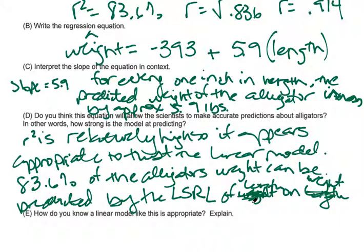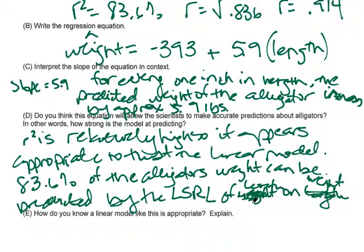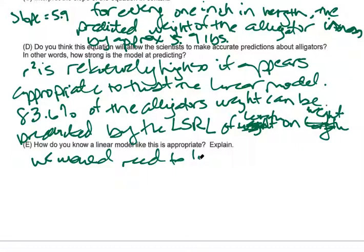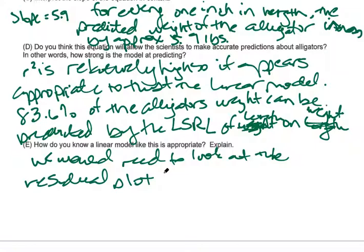How do you know a linear model like this is appropriate? Well, actually what we would have to do is look at the residual plot. So we don't know if it's really appropriate because those numbers, the r square, can be high, but we don't know what the residual plot looks like. So your answer here: we would need to look at the residual plot to determine if the least squares regression line is appropriate with this data.